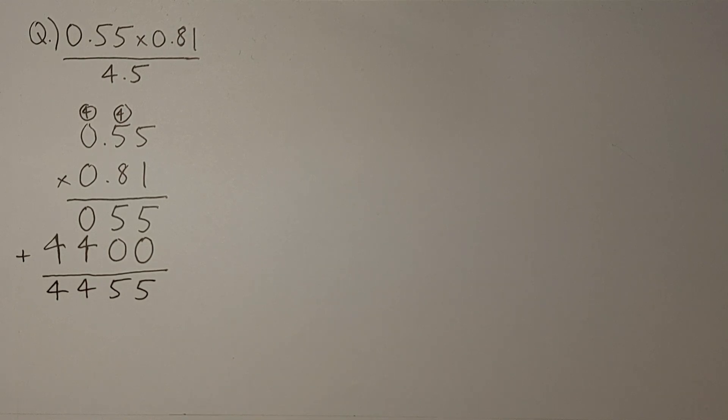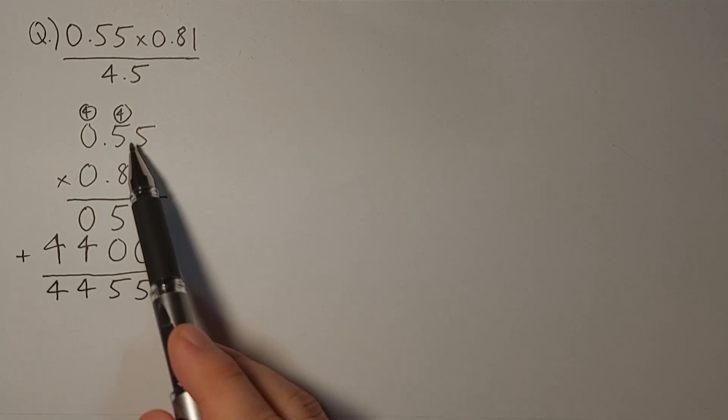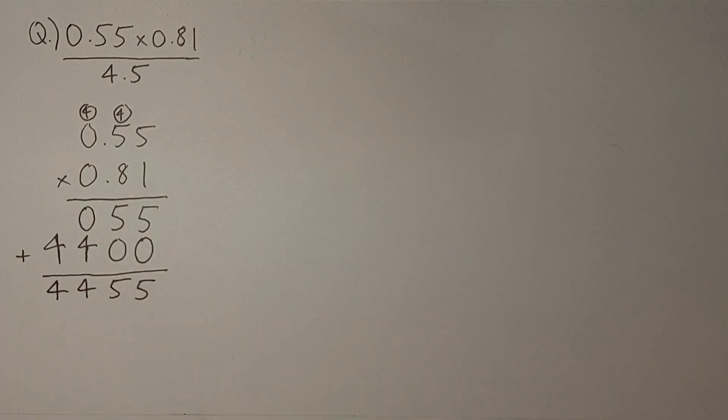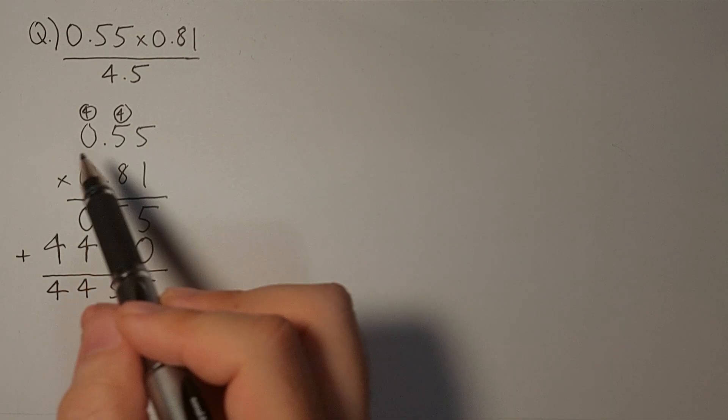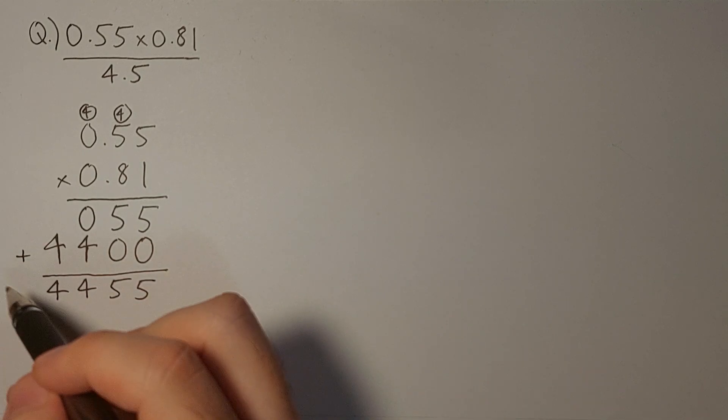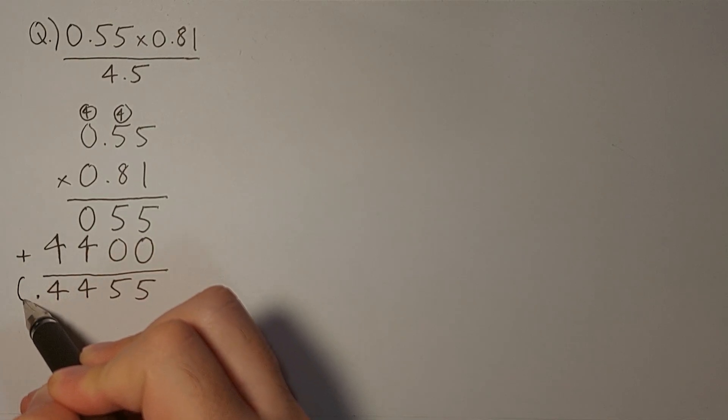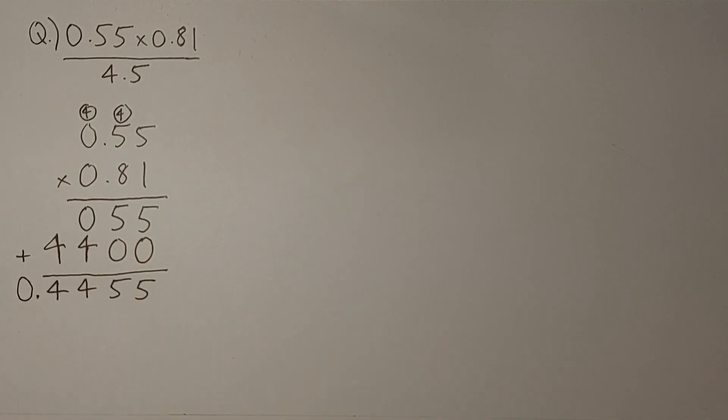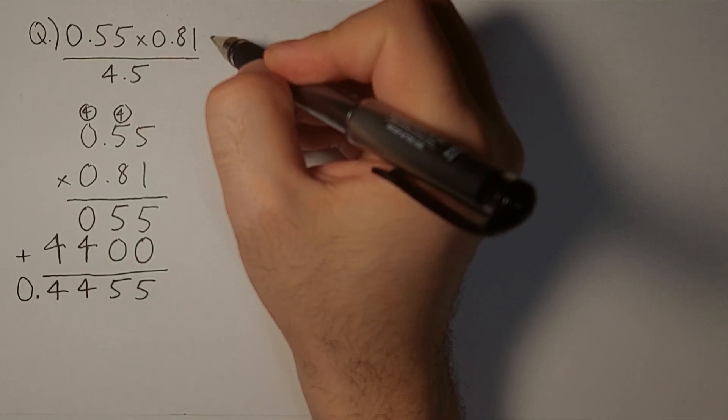Now we need to place the decimal point. So what is the total number of digits after the decimal point in both the numbers? 1, 2, 3, 4. So we look at our answer for this part of the question and we start counting from the right: 1, 2, 3, 4. We place a decimal point here and we place a 0 here. So this solves the numerator part.